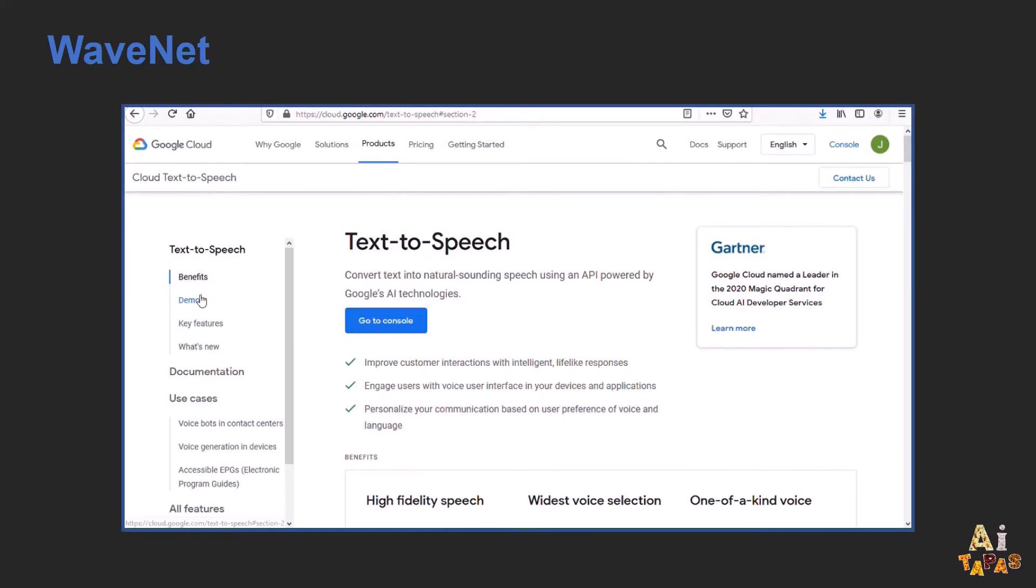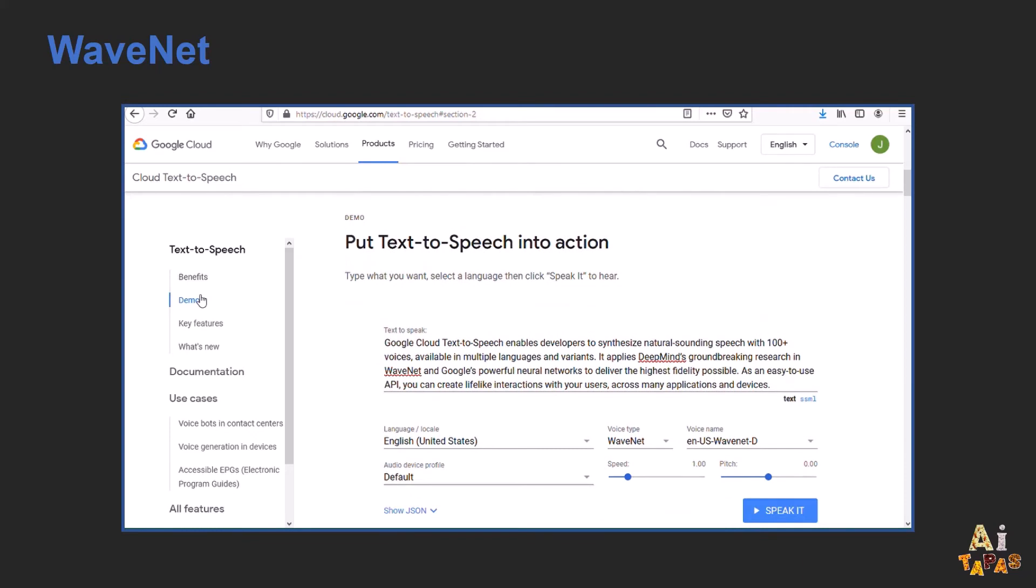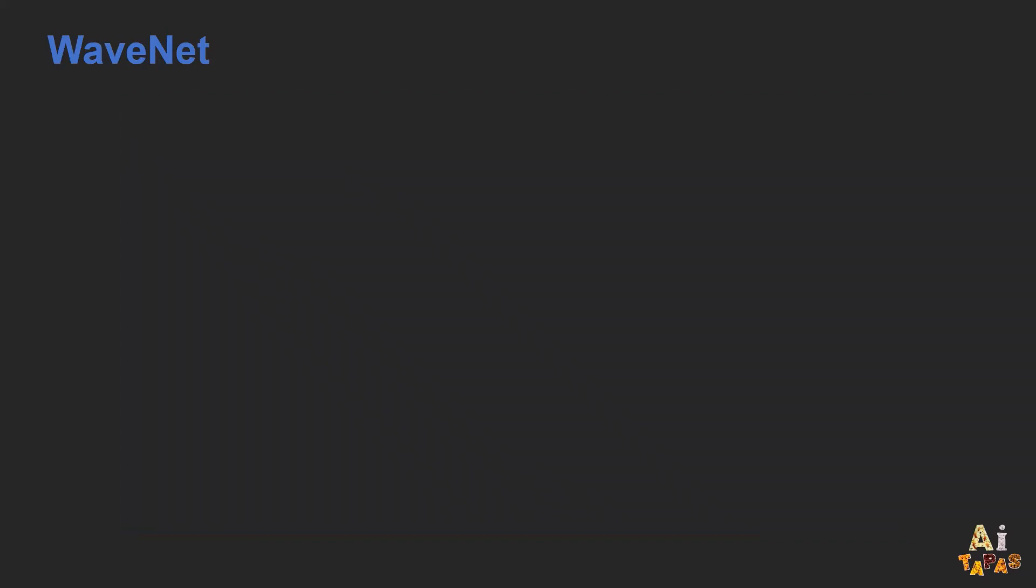Currently, Google's text-to-speech API is powered by WaveNet, and you can experiment with it yourself on Google Cloud's website. To understand how WaveNet was able to achieve the breakthroughs, let's first understand how audio is represented digitally.